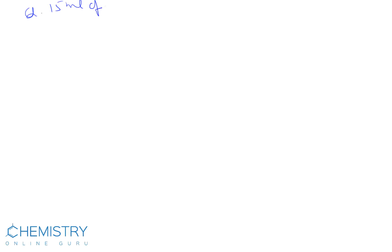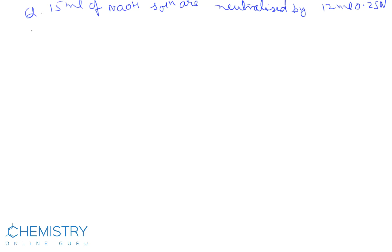Today we will discuss some more numericals of normality. First question: 15 ml of NaOH solution are neutralized by 12 ml of 0.25 N H2SO4. Calculate the normality of NaOH solution.